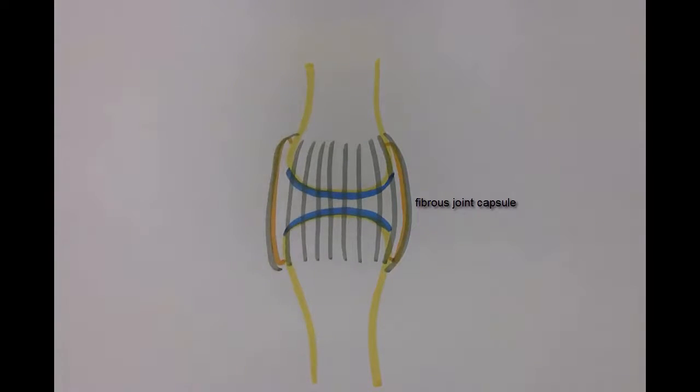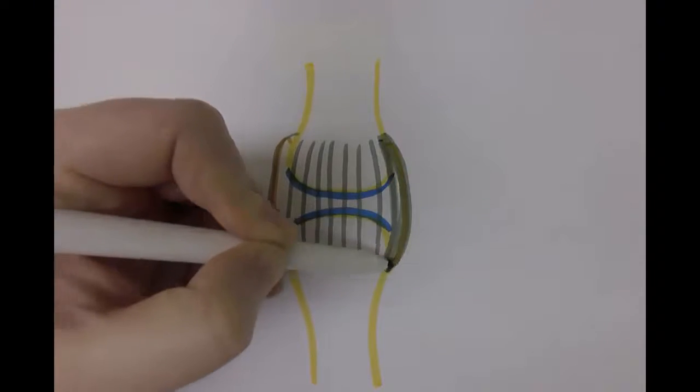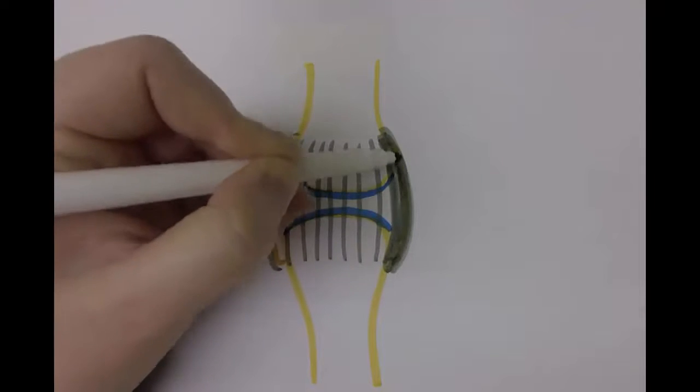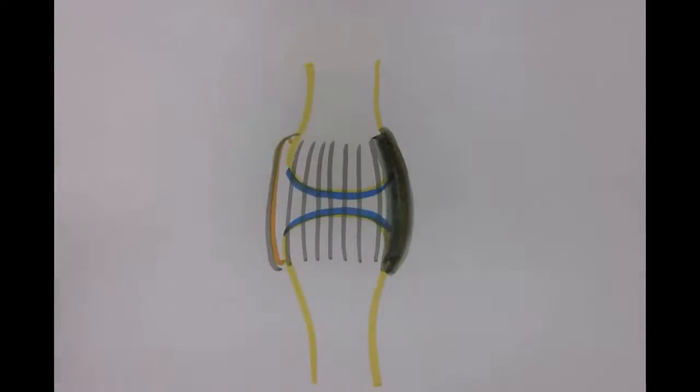In some areas the fibrous joint capsule is thinner and in some areas it's thicker. So we're just going to draw a thickening of this fibrous joint capsule on the left side of this particular joint. And that thickening can now be labeled as an intrinsic ligament.